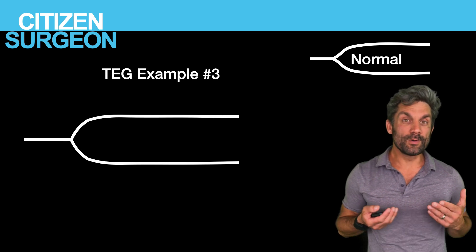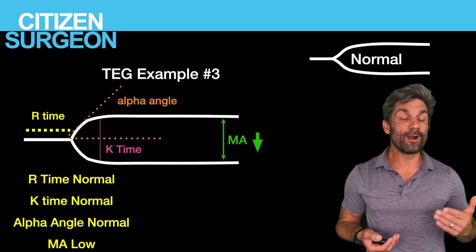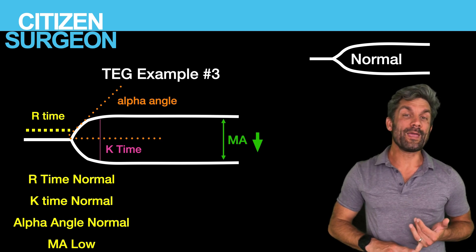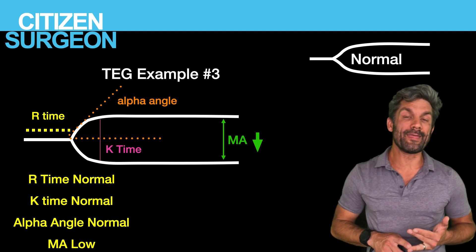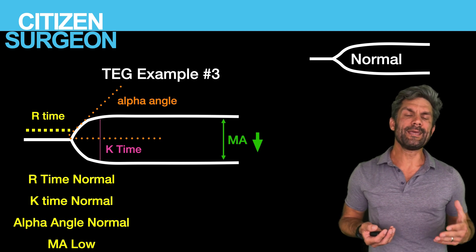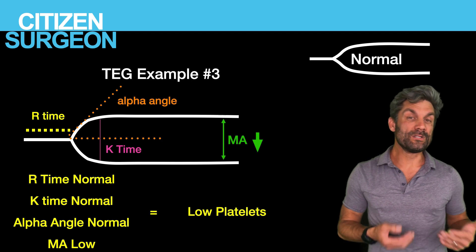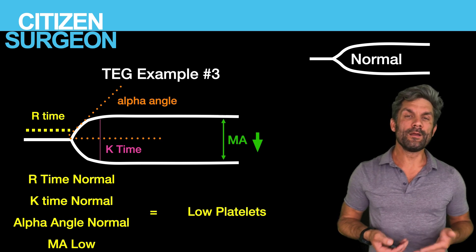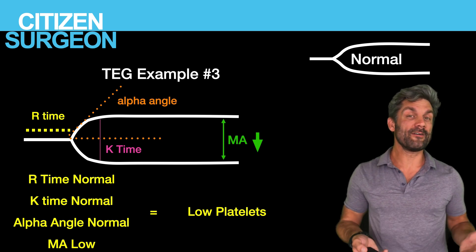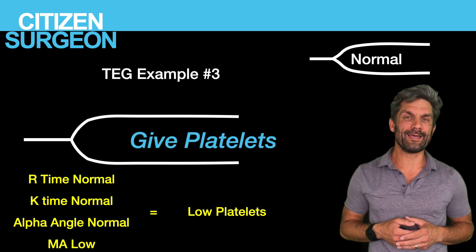In this third waveform, our R time is normal, our K time and alpha angle are normal — so we have all the coagulation factors and enough fibrinogen — but our maximum amplitude is low. That means either we don't have enough platelets or our platelets aren't working. Perhaps in a patient on aspirin, we have enough platelets but they're not functioning. What do we need to do? Transfuse platelets.